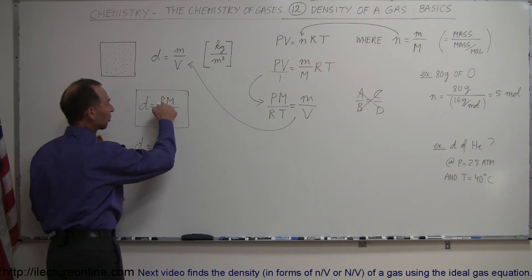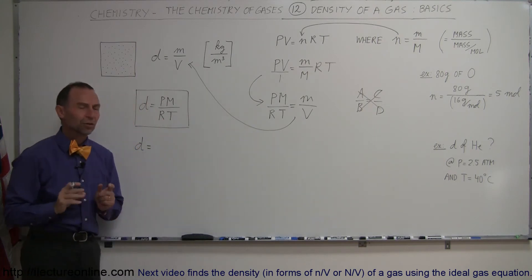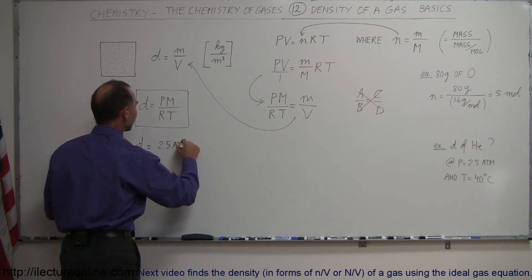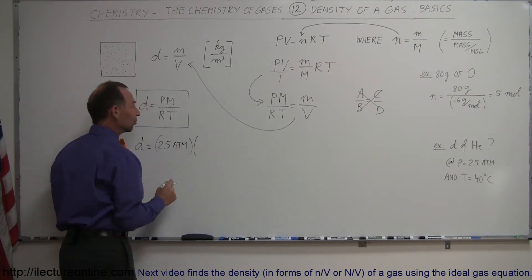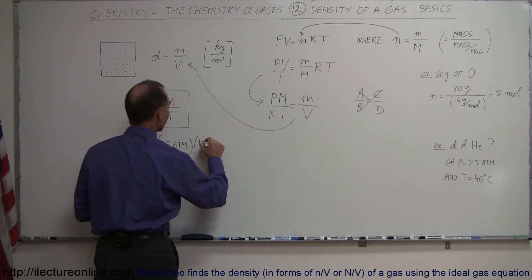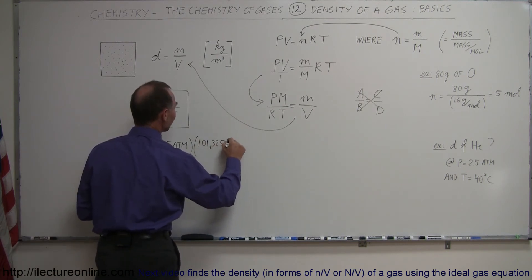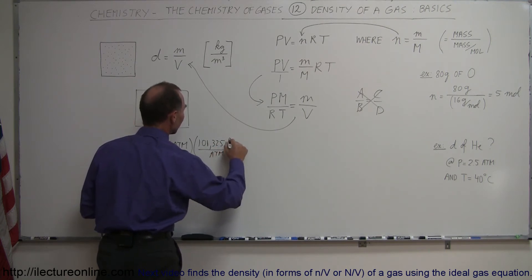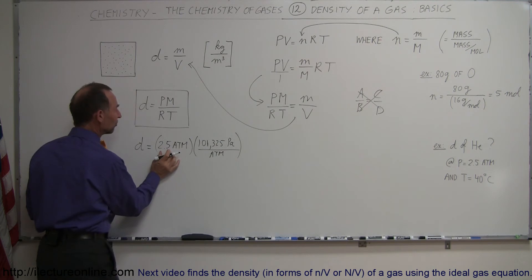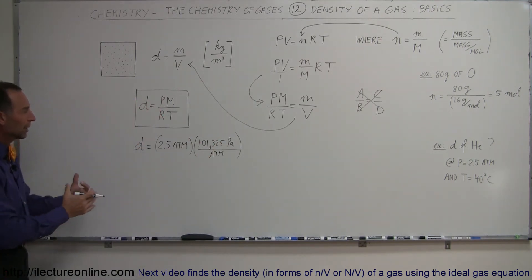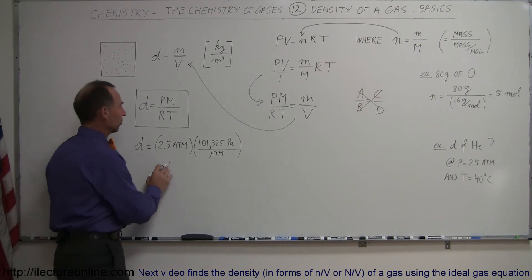Density equals pressure times molar mass divided by RT. The pressure is 2.5 atm, but that's not standard units. We convert to pascals: 1 atmosphere equals 101,325 pascals (newtons per square meter). So we multiply 2.5 by 101,325 to get the pressure in standard units.